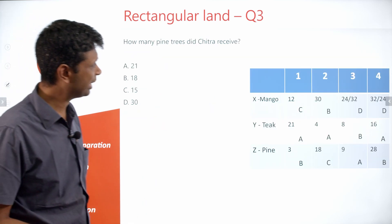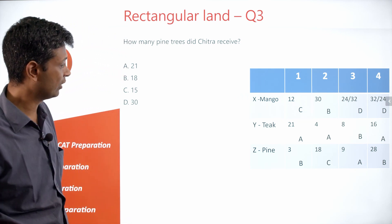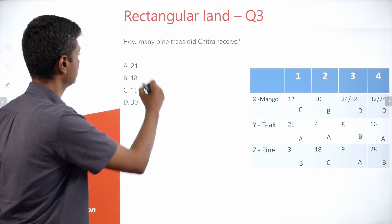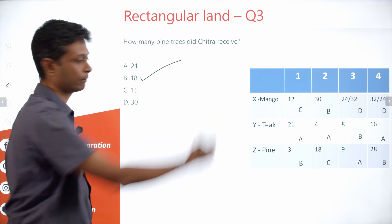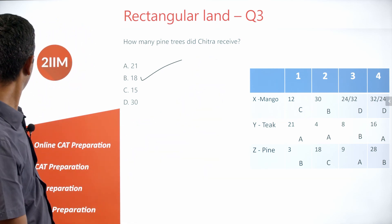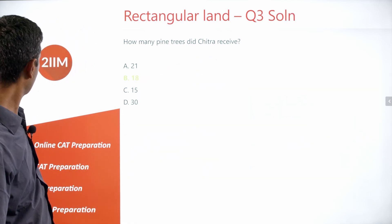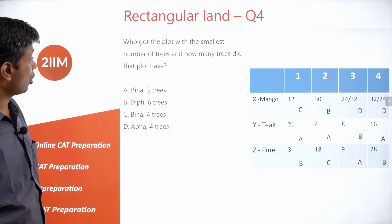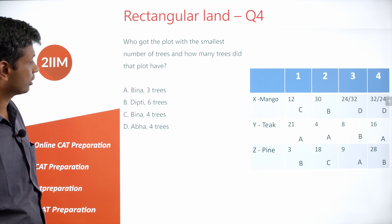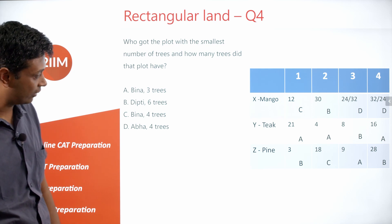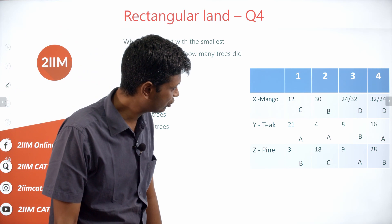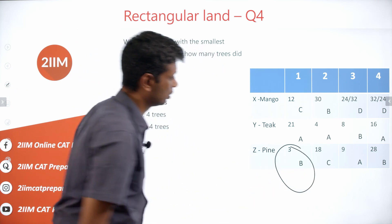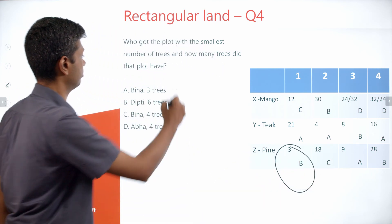Question 3: How many pine trees did Chitra receive? Pine for Chitra is 18 — straightforward. Question 4: Who got the plot with the smallest number of trees and how many? The smallest number is 3, and that plot belongs to Bina.